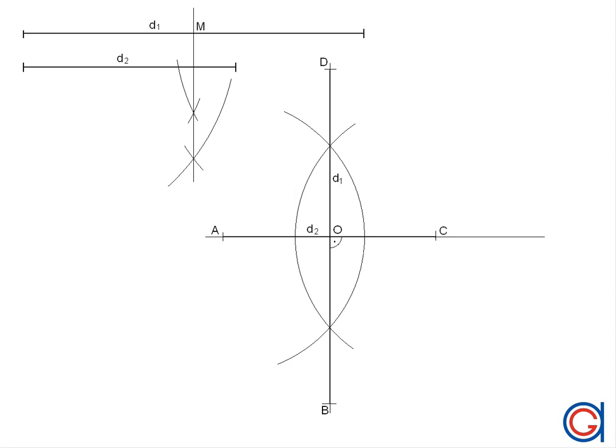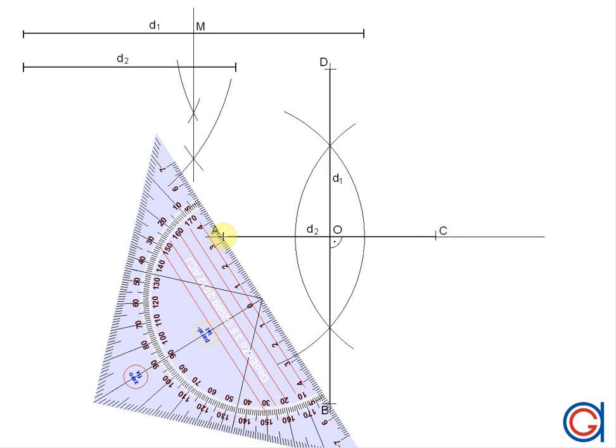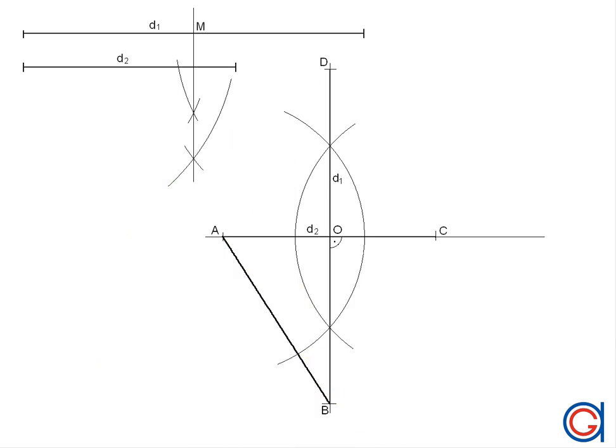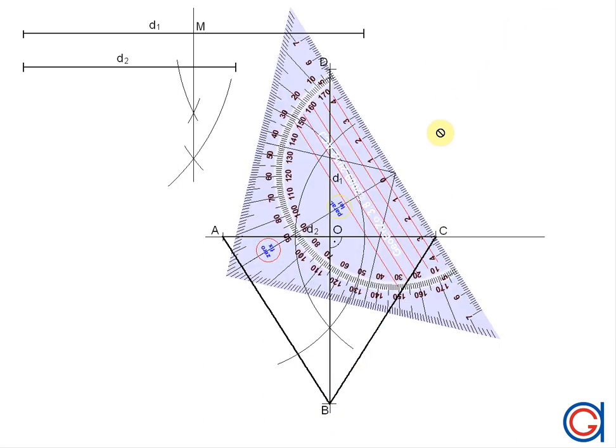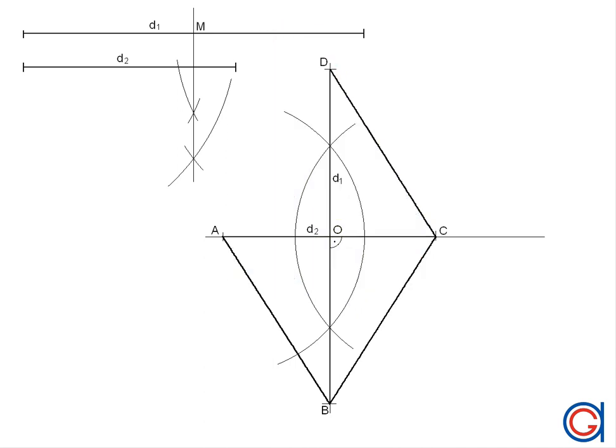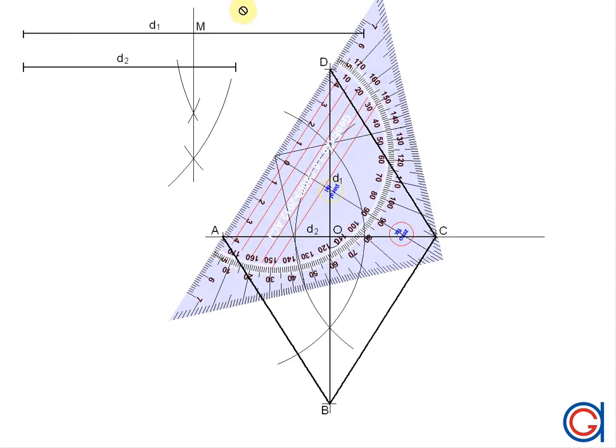So the final step to complete our rhombus is to join vertex A to B in a thicker line, vertex B to C, vertex C to D, and finally to complete our rhombus, vertex D to A.